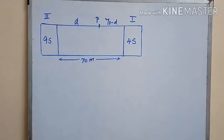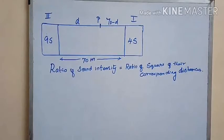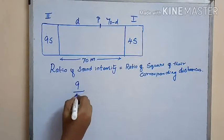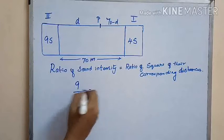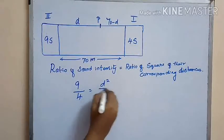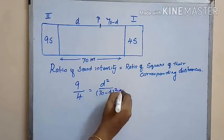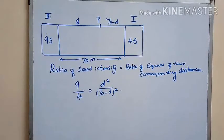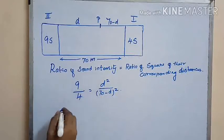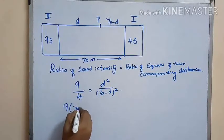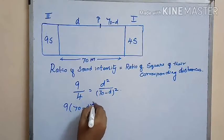Given that the ratio of sound intensity is equal to the square of the ratio of their corresponding distances, we get: 9 by 4 — that is the ratio of the sound intensity — is equal to d squared by (70 minus d) whole squared, which is the ratio of the square of their corresponding distances.